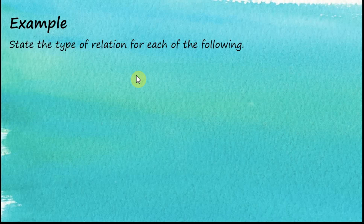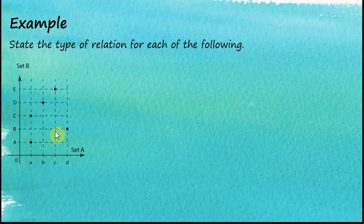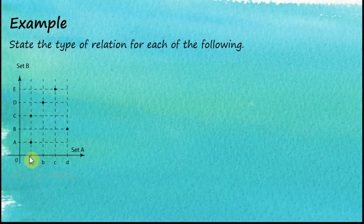Let's see another example. Again, you are asked to state the type of relation for each of the following. This is a Cartesian graph. From the graph, we can see that we have one object mapped to two images, and the other is just one object to one image. Therefore, this is one-to-many: one object, many images.